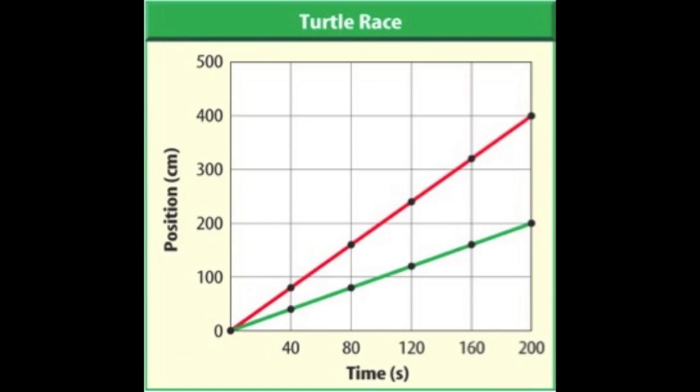Now when objects are graphed and the lines are straight like these, that means that the objects are traveling at a constant speed. So for every interval of time, the object is moving at the same speed.